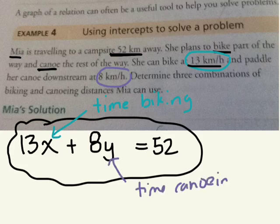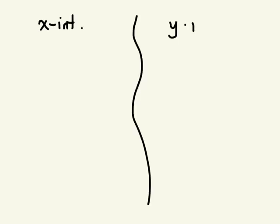We want to know different possible combinations. So if she biked for two hours, let's say, how many hours can she canoe for? And so on. Because we need to find different possible combinations, if we put this on a graph, we can find any single point on the line and interpret it. So let's do X-intercepts and Y-intercepts so we can graph it.